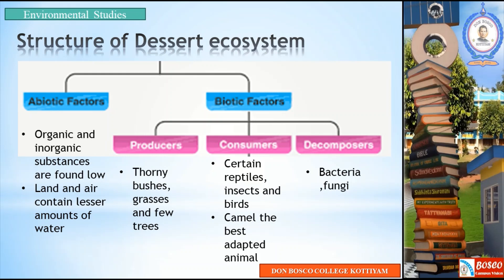Major abiotic factors include soil. Under the biotic factors, they are further divided into three: producers, consumers, and decomposers. The main producers under the desert ecosystem are tiny bushes, grasses, and a few trees. Under the consumers are certain reptiles, insects, birds, and camel — the best adapted animal in desert conditions. Decomposers include bacteria and fungi. This is the structure of the desert ecosystem.